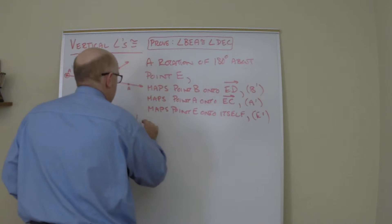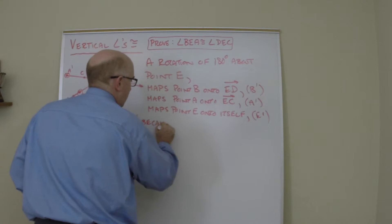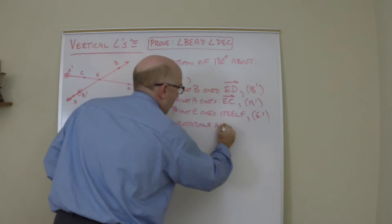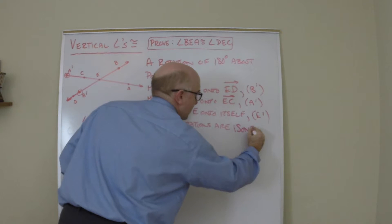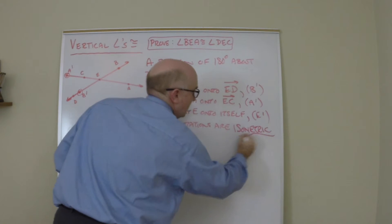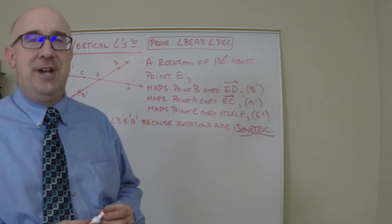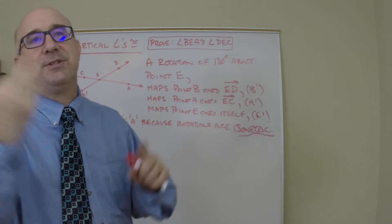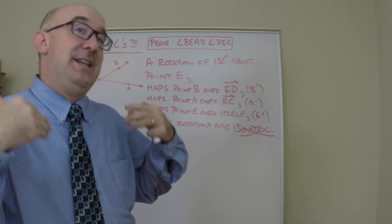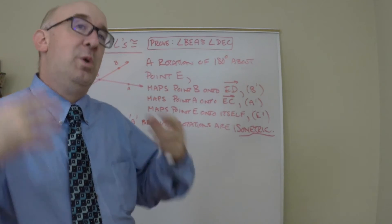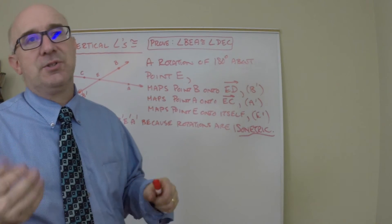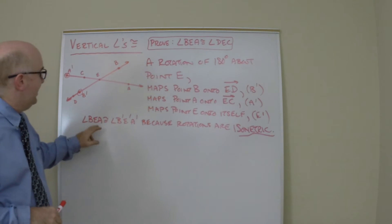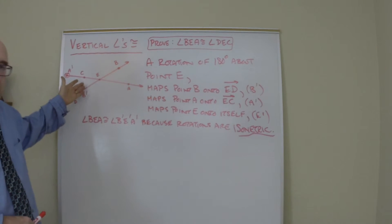Because rotations are isometric—very important word. We spent time earlier developing the isometric nature of rotations, reflections, and translations. It means the angle will be identical to its image when you're done—angles, sides, everything copies the same. So this equals the image I just made on those opposite rays.